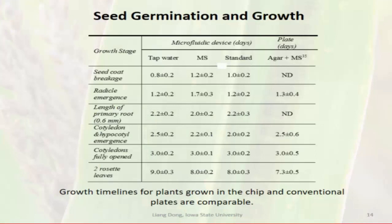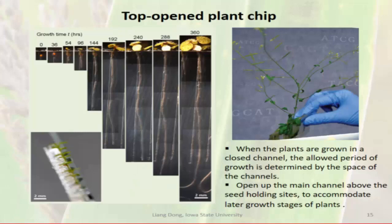You may ask how plants grow on the chip compared to traditional methods. The conclusion is that the growth timelines for plants growing on a chip are comparable to those grown on conventional plates. When plants grow very tall, you can open the top surface of the device to let them keep growing, and you can further do screening and measurement.